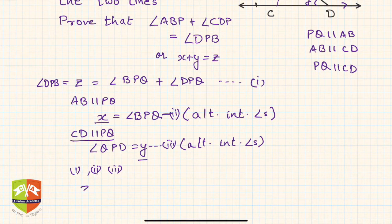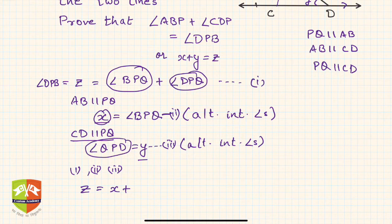by y. So hence, we can say z equals BPQ first. And what was BPQ? It was x. So it is x plus DPQ, or QPD. What was that? y. Hence proved.